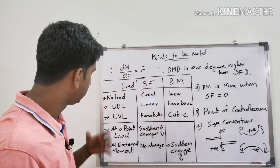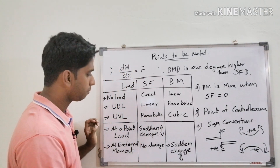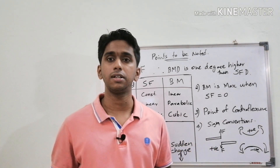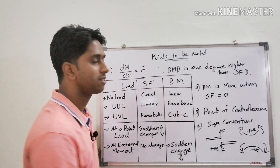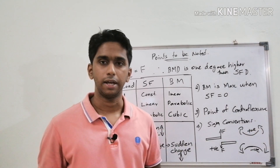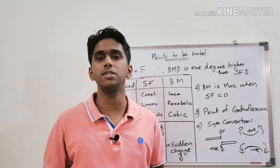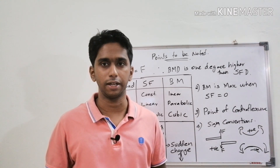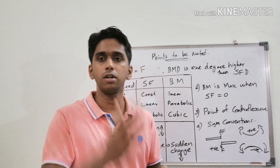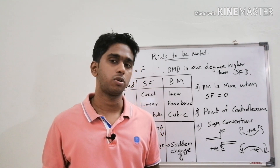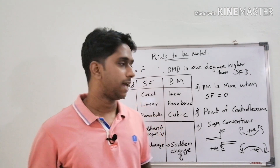In the case of an external moment, there is no change in the shear force diagram, but there will be a sudden change — a vertical shift — in the bending moment diagram. This shift may be upward or downward depending on whether the external moment is clockwise or anti-clockwise.